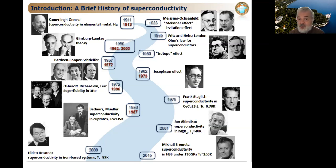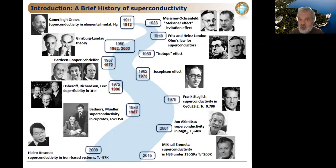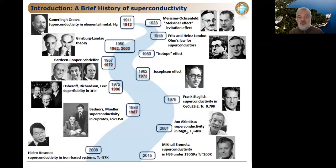In 1962, Josephson predicted what is now called the Josephson effect. There are several versions: the DC Josephson effect, where a DC current runs through the contact between two superconductors without applying external voltage, attributed to phase difference of Cooper pairs. The AC Josephson effect states that applying a constant DC voltage results in an AC current through the junction, whose frequency is proportional to the DC voltage applied.